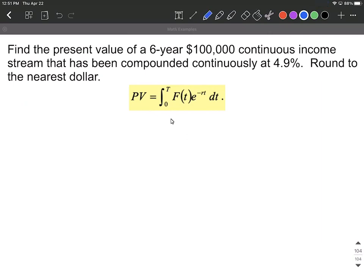So our present value formula, the present value is going to be equal to the integral between zero and however long this is going to be. So this is our time frame of six years. So six goes up here. And then our function, this is a continuous function of $100,000 each year. So $100,000 gets plugged in for f of t.